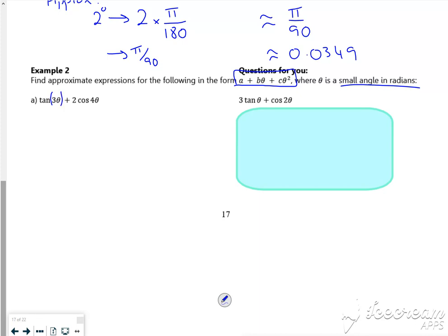Right, so put my brackets in here so I don't stuff this up. So I know that tan theta is approximately theta, and cos theta is approximately 1 minus 1 half theta squared.